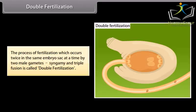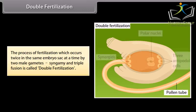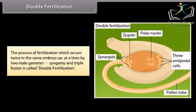Double fertilization. The process of fertilization which occurs twice in the same embryo sac at a time by two male gametes, syngamy and triple fusion, is called double fertilization.